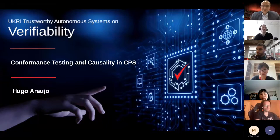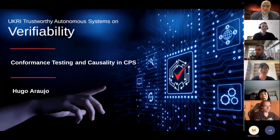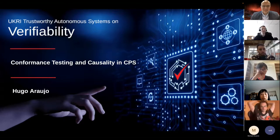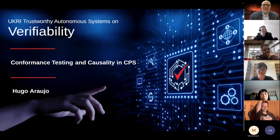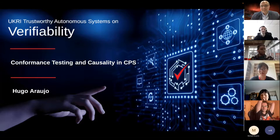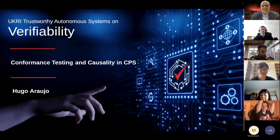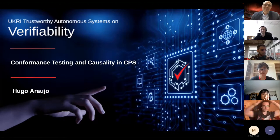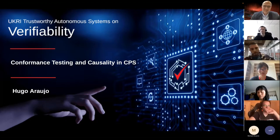Welcome everyone to this edition of the Verifiability Talk series. It's my pleasure to introduce Hugo Araujo. Hugo has been with us since the beginning of this project. He's a postdoctoral research associate at King's College London and his interest is in conformance testing. He has done his PhD in this area and he's continuing his research on testing robotic and autonomous systems, also looking at using causality to explain the results of testing and verification. He will be talking about his research in these areas today.